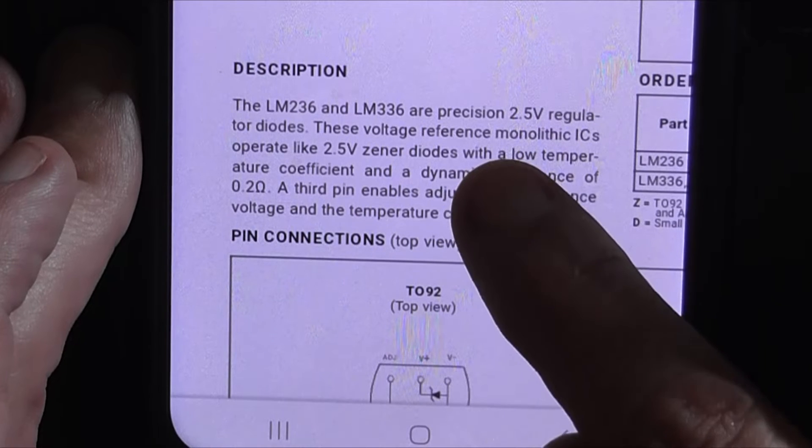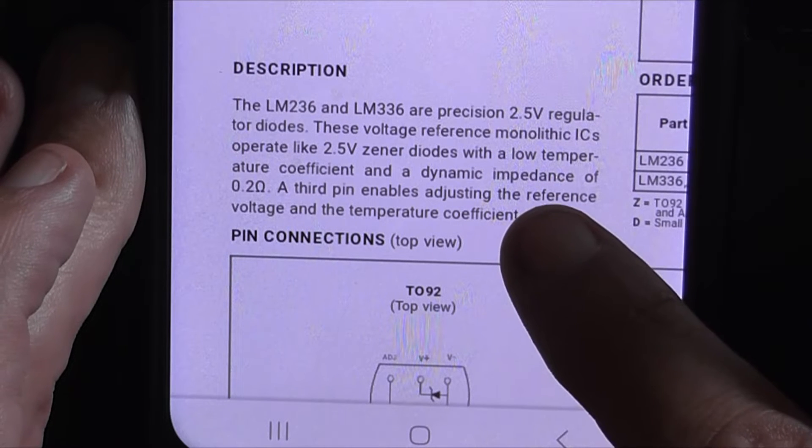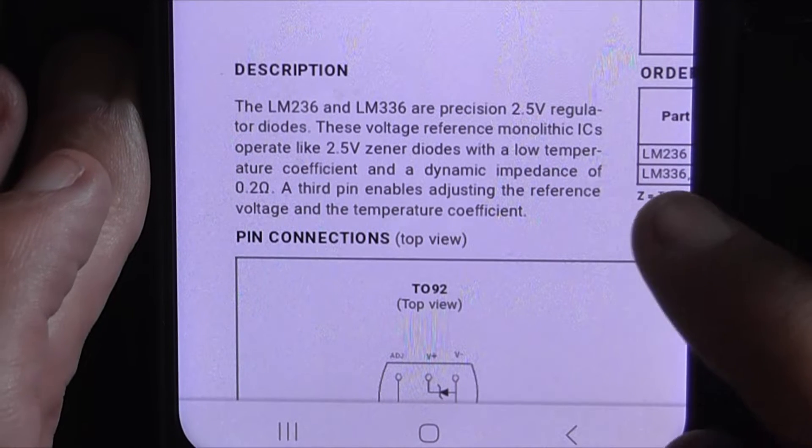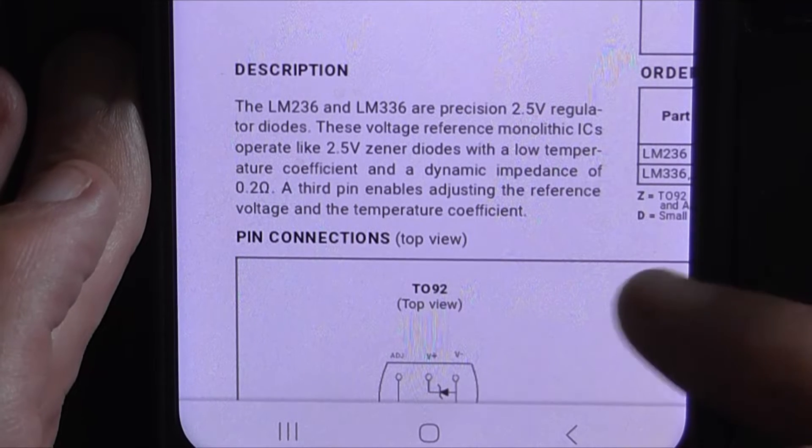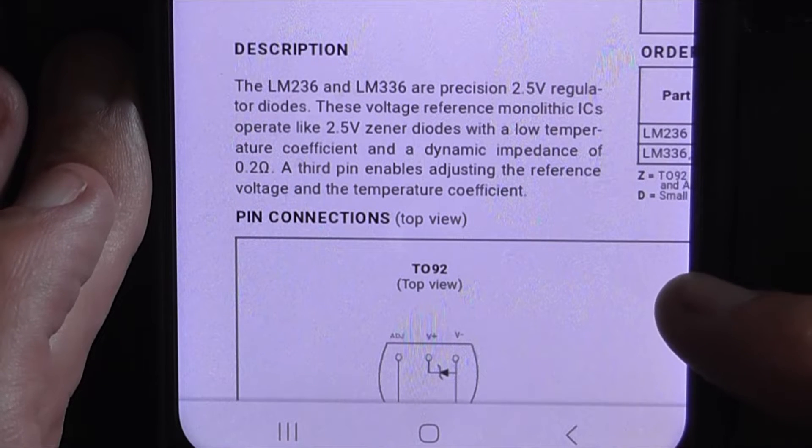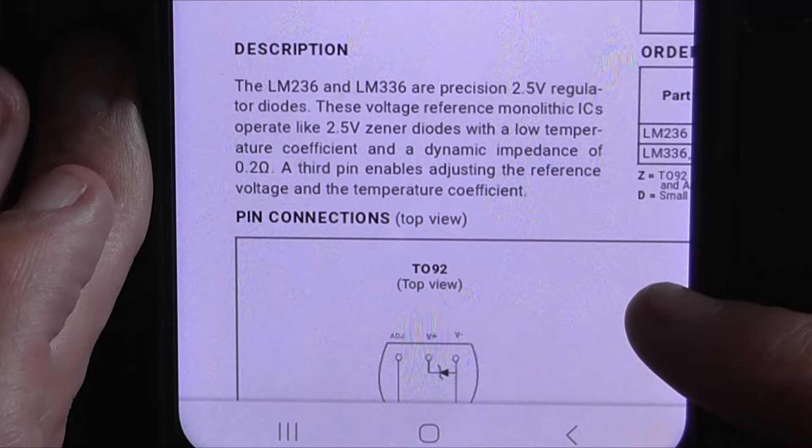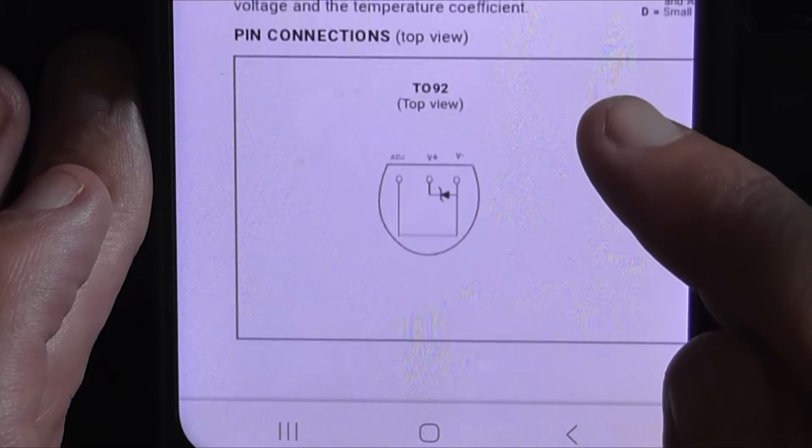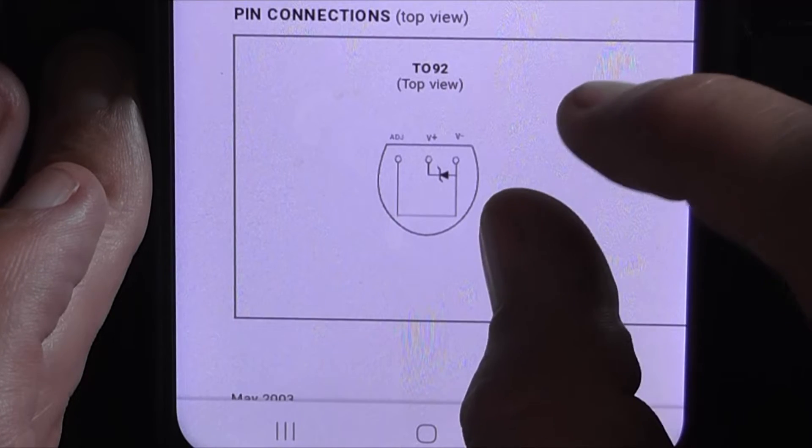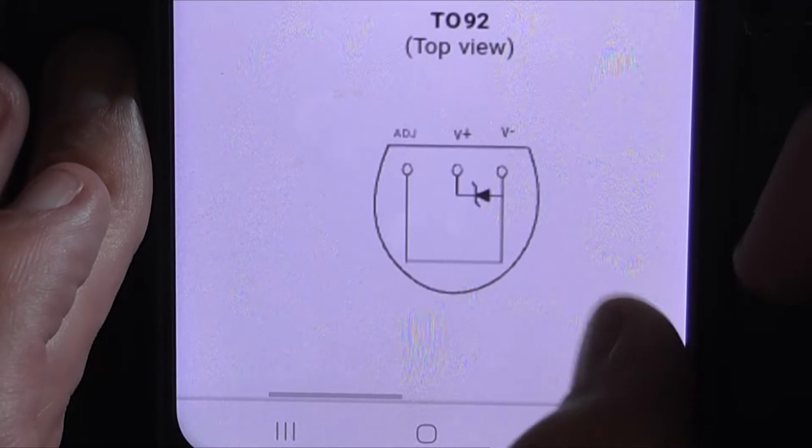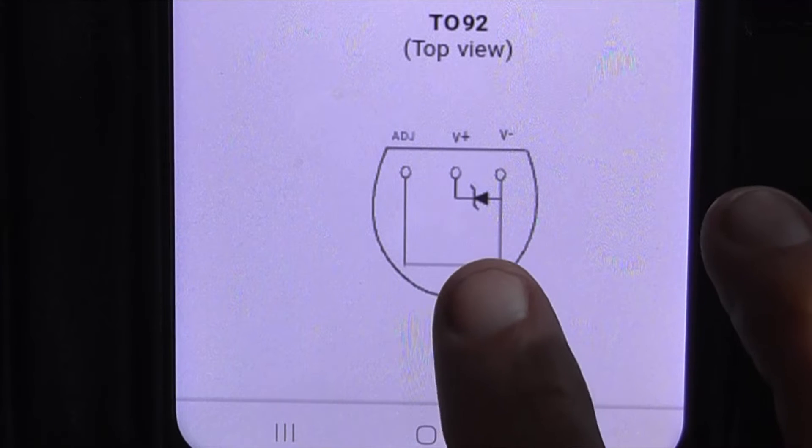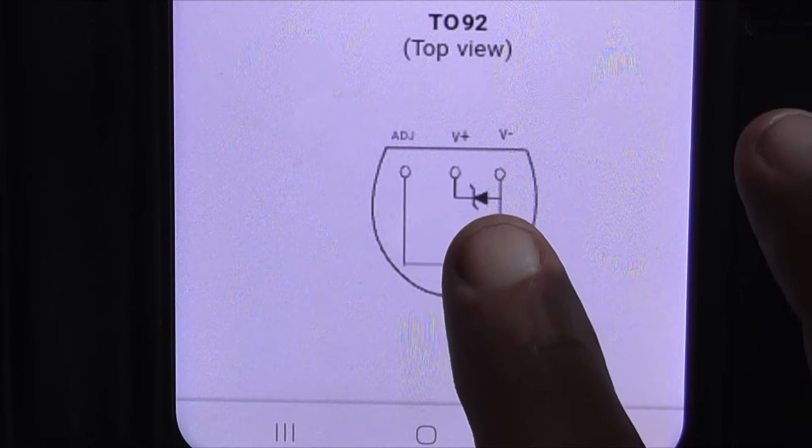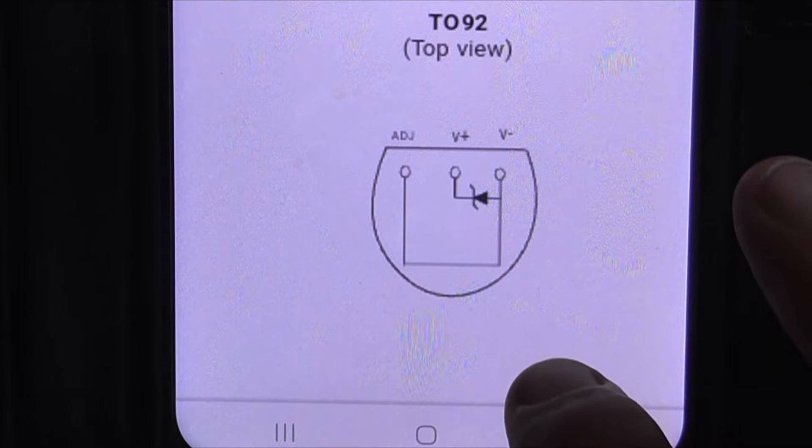Okay this is a look at the data sheet here. With the description the LM236 and 336 are precision 2.5 regulator diodes. Basically reference diodes. These voltage reference monolithic ICs operate like a 2.5 volt zener diode with a low temperature coefficient and a dynamic impedance of around 0.2 of an ohm. And as they say the third pin enables adjusting the reference voltage and the temperature coefficient. So this is a look at the pinouts from the top view. So in the T092 version of course. So the adjust pin is pin 3. The voltage positive or the cathode of the diode is pin 2. And its anode is pin 1.